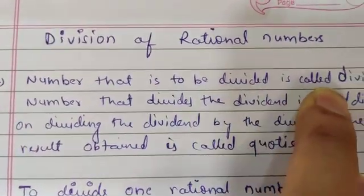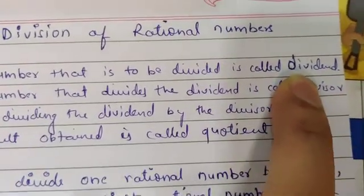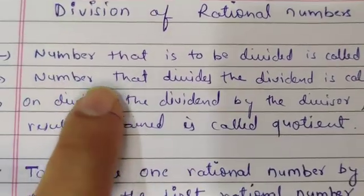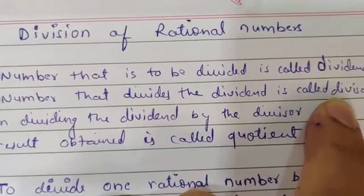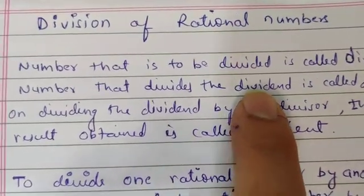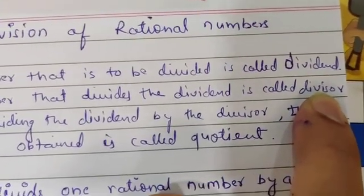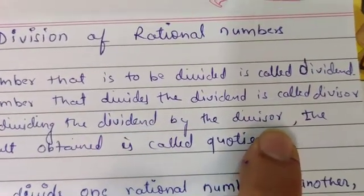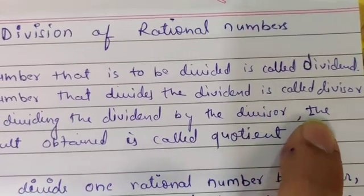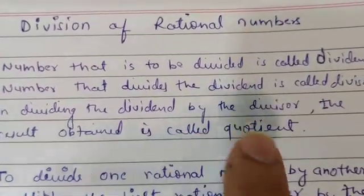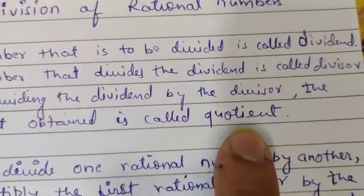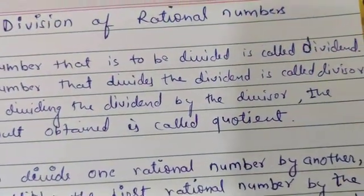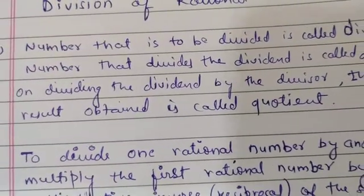The number that is to be divided is also called the dividend. As you already know, हम जिस number को divide करते हैं उस number को कहते हैं dividend. The number that divides the dividend is called the divisor. और हम जिस number से divide करते हैं, dividend को, उस number को कहते हैं divisor. On dividing the dividend by the divisor, the result obtained is called the quotient. I hope you already know about these three things: dividend, divisor, and quotient. And one more is remainder, जो आप लोगों को बहुत अच्छे से पता है।